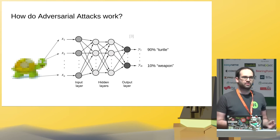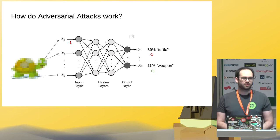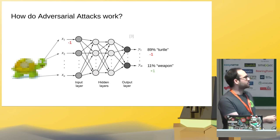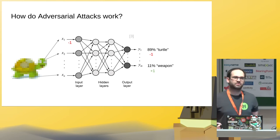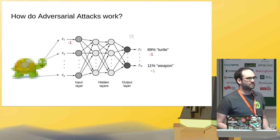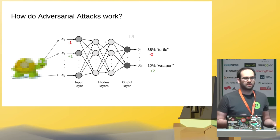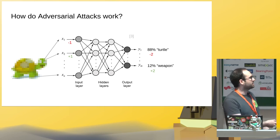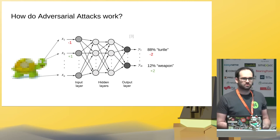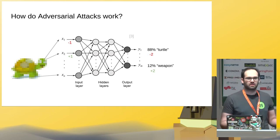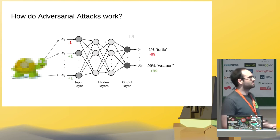So, what happens if we alter one pixel by a slight amount? We can see here, if we deduct one from the input pixel, the output of the network changes by a small amount — in this case, 1%. Now it's only 89% confident that this is a turtle, and 11% confident that this is a weapon. If we continue this with the next pixel, we have to change it up by one, and the error accumulates. Our confidence that this is a turtle decreases with each pixel. If we do this for all the pixels, suddenly we have a 99% probability that this is a weapon.